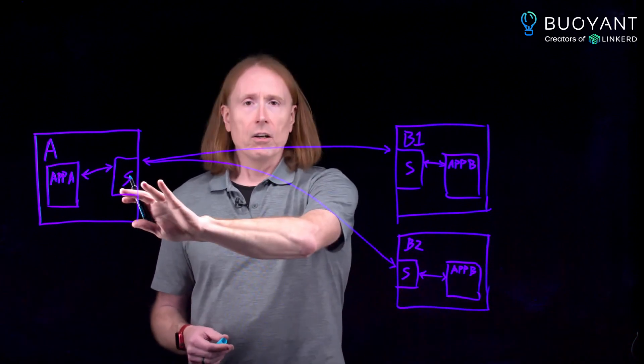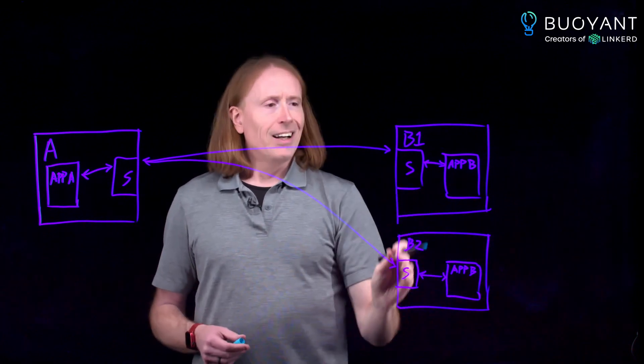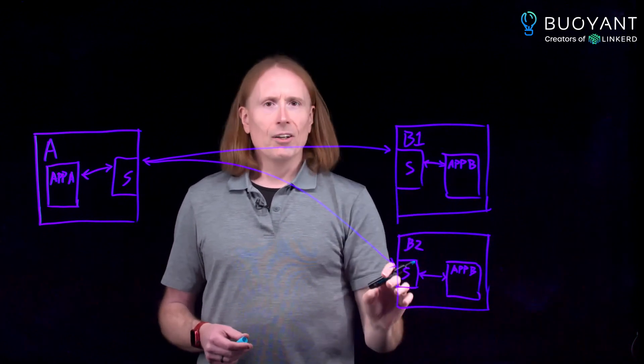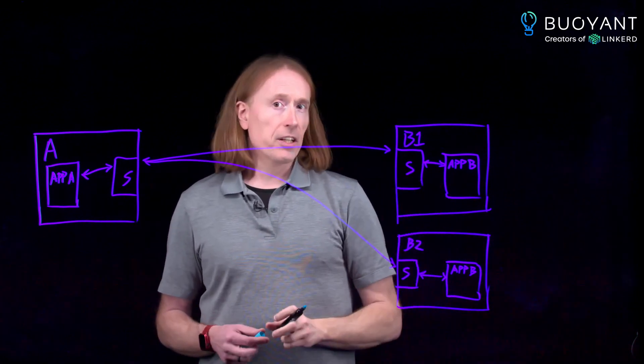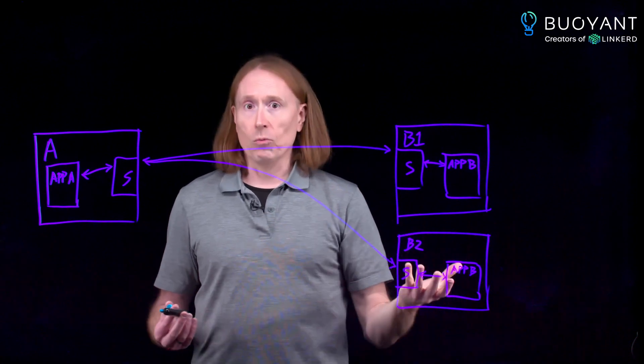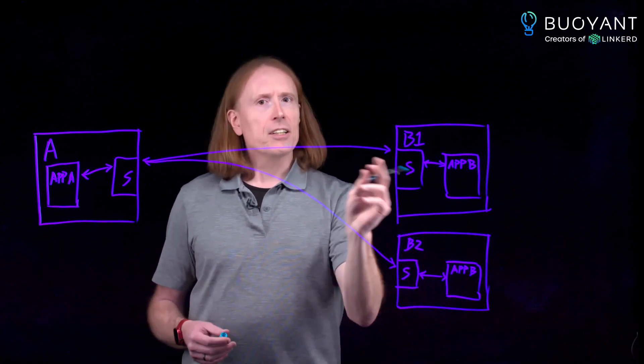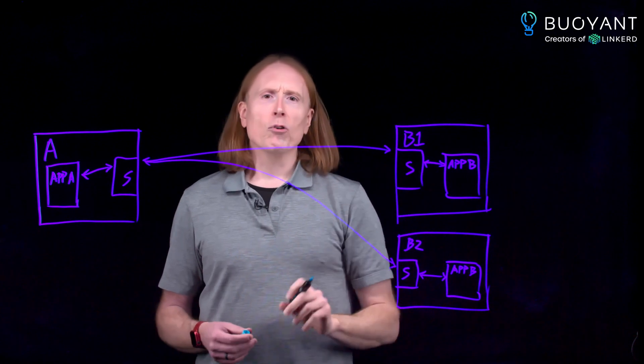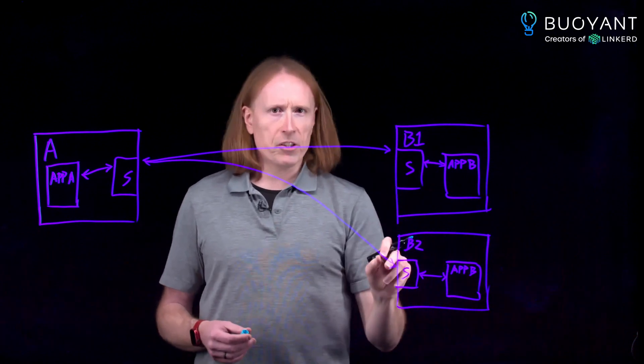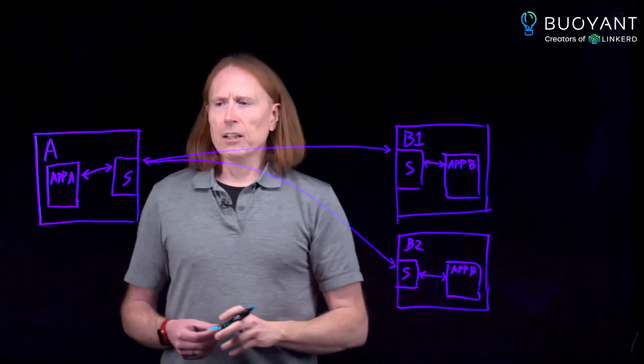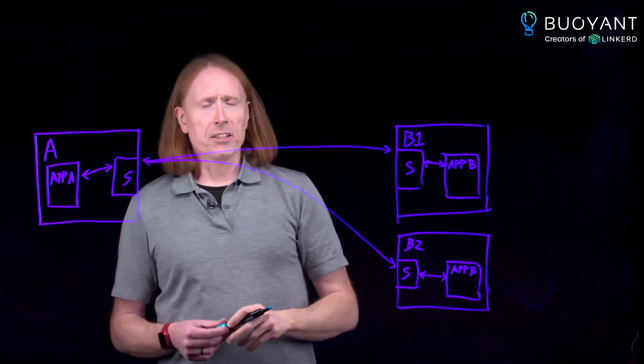With Linkerd, the sidecar here deciding which to go to actually gets to know how busy each of these sidecars is because of the way Linkerd works. And so it can deliberately decide to route, oh, this request I'll send over to B1 because it's less busy than B2 at this particular moment. Linkerd puts a lot of effort into getting that right. It's kind of nice.